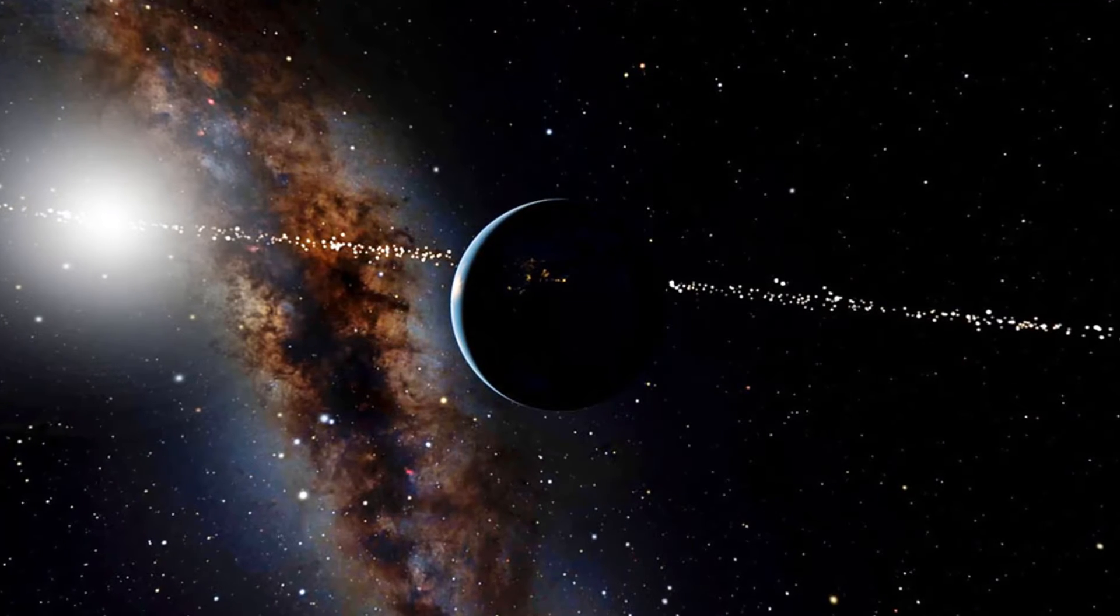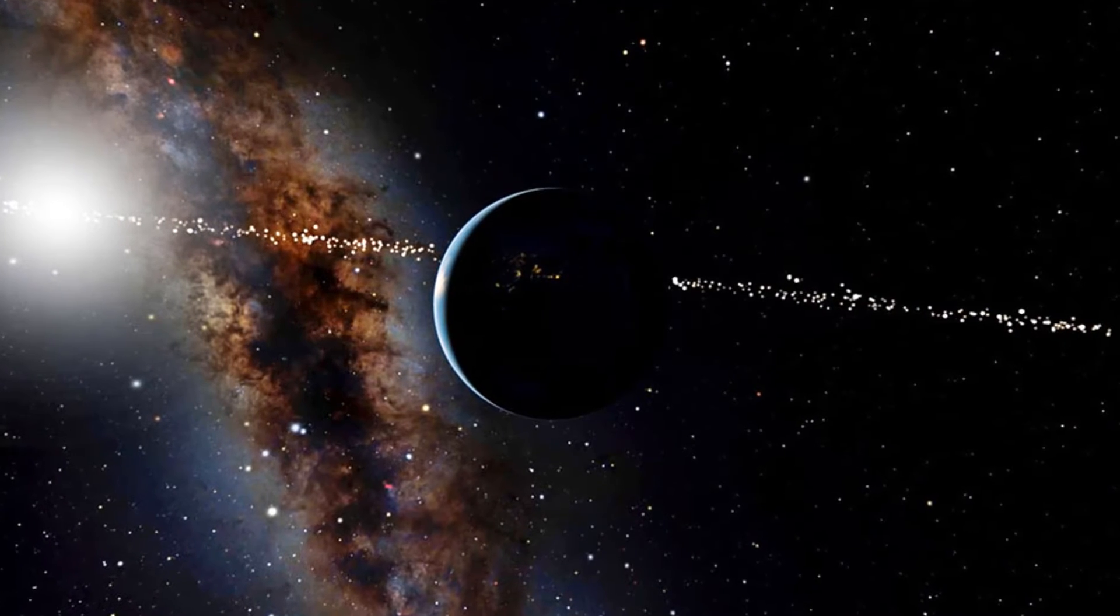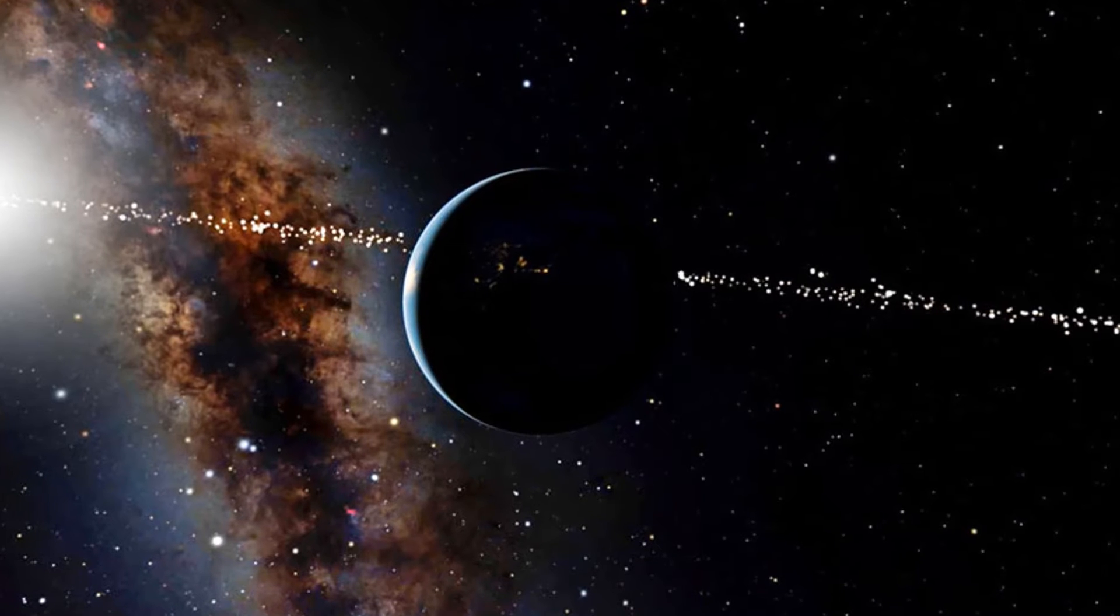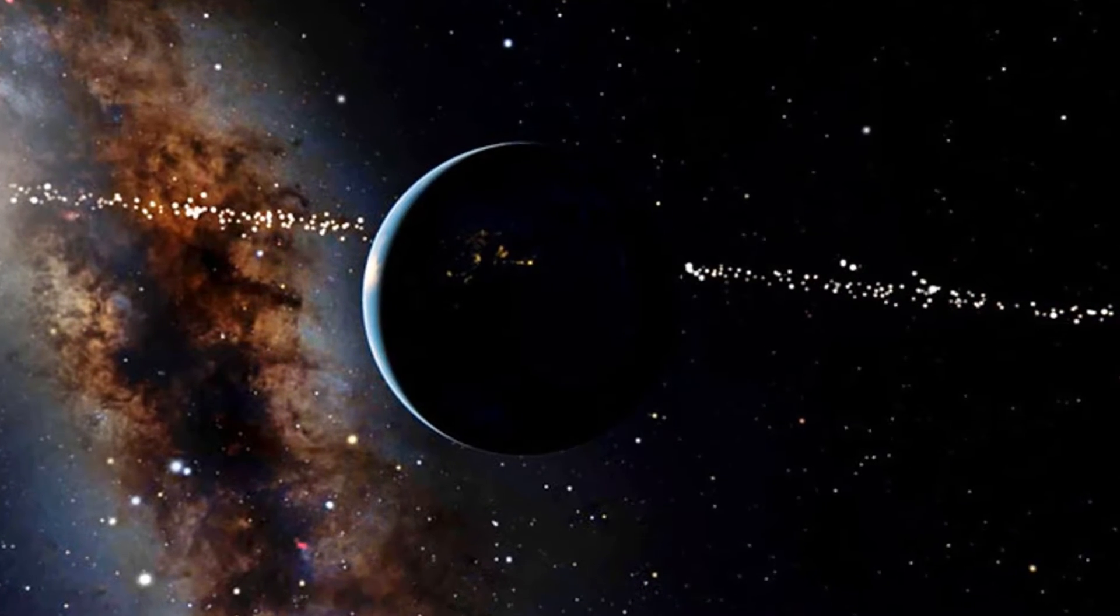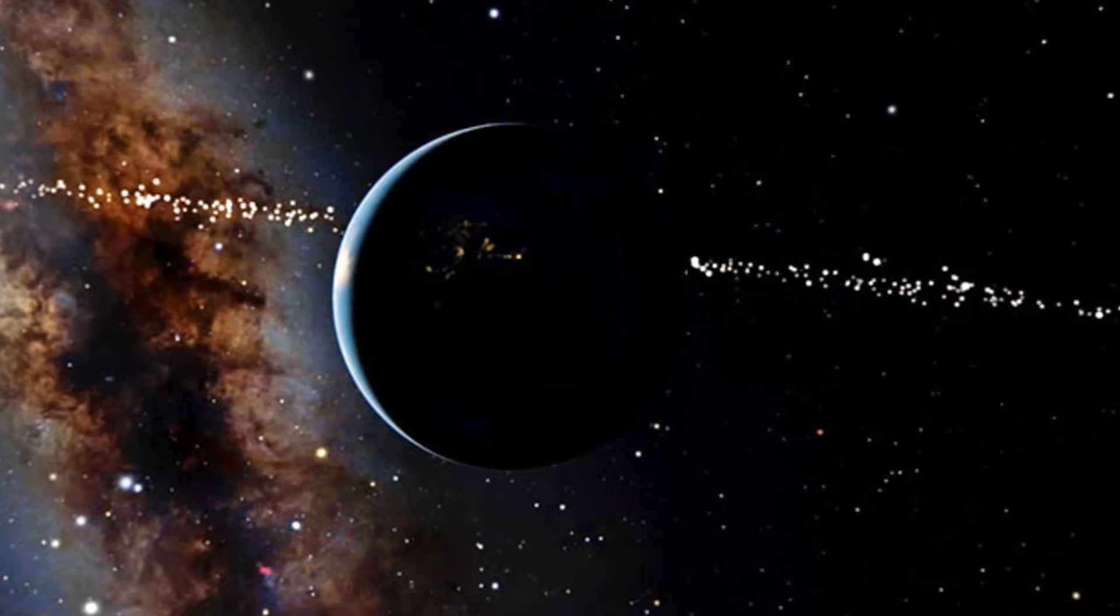Astronomers look for distant planets by watching for the shadow the worlds cast when passing between their star and Earth. If any aliens are searching for other intelligent life, they could spot us using the same trick.